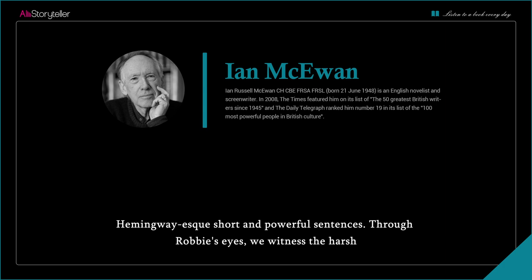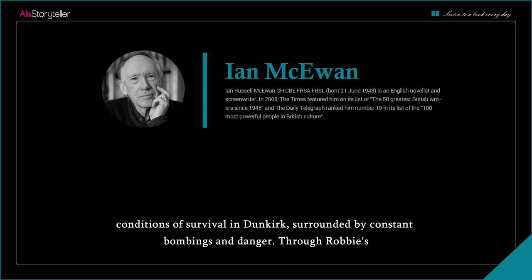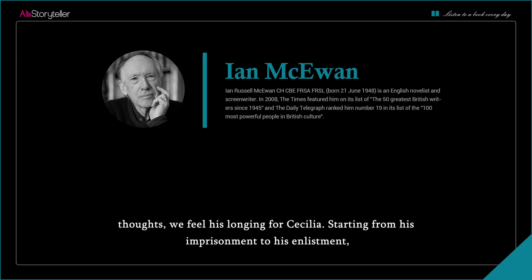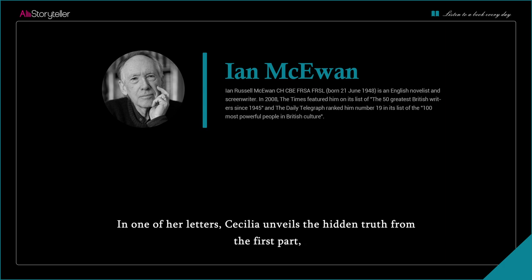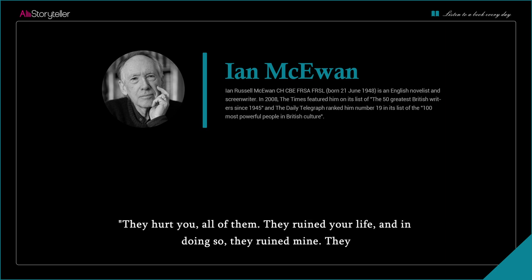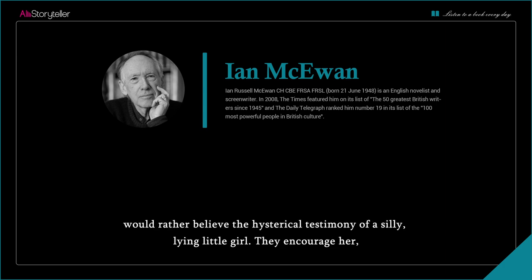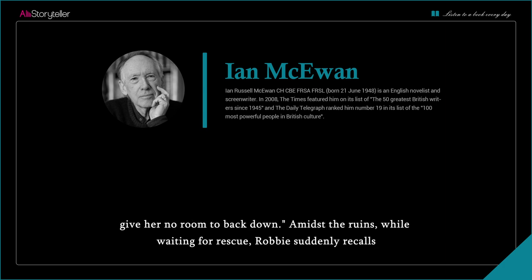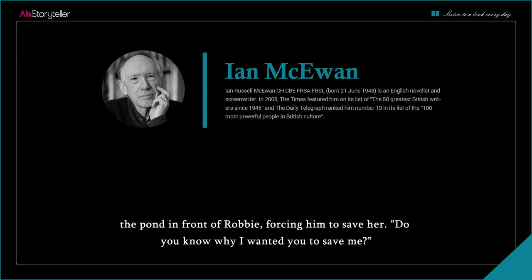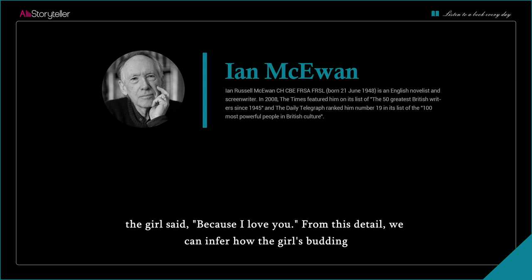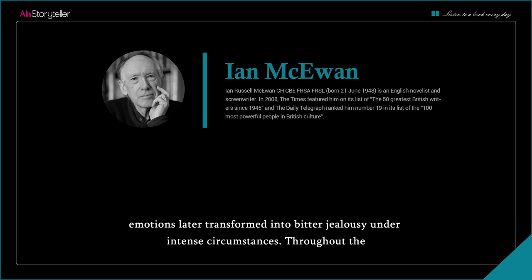Through Robbie's eyes, we witness the harsh conditions of survival in Dunkirk, surrounded by constant bombings and danger. Through his thoughts, we feel his longing for Cecilia. Starting from his imprisonment to his enlistment, Cecilia braved all odds to visit him, bid him farewell, and never ceased to correspond with him. In one of her letters, Cecilia unveils the truth: 'They hurt you, all of them. They ruined your life, and in doing so, they ruined mine. They would rather believe the hysterical testimony of a silly, lying little girl.' Amidst the ruins, while waiting for rescue, Robbie suddenly recalls that in the summer of 1932, the ten-year-old Bryony deliberately jumped into the pond in front of him, forcing him to save her. 'Do you know why I wanted you to save me?' the girl said. 'Because I love you.' From this detail, we can infer how the girl's budding emotions later transformed into bitter jealousy.